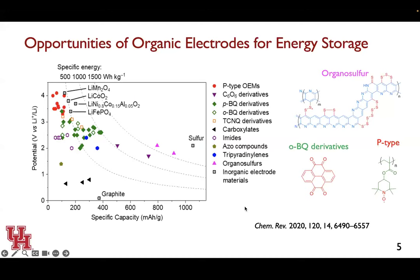The beauty of organic materials is that we have tremendous structural variation, which really provides opportunities. In a Chemical Reviews paper, we compared different types of organic materials with inorganic ones side by side. In fact, many organic materials have material-level energy density comparable to inorganic materials. Some materials shown in green have material energy density of more than 800 to 1000 Wh/kg. We also have organic sulfur batteries with higher capacity and lower voltage, and P-type radical-based polymers with higher voltage but lower capacity.